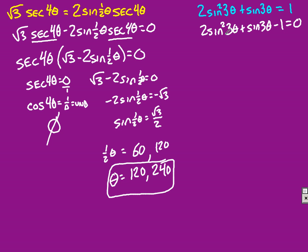If it helps, think of each sine as an x squared. So, that would be the same as, like, 2x squared, plus an x, minus 1, equals 0. And how would I factor this?